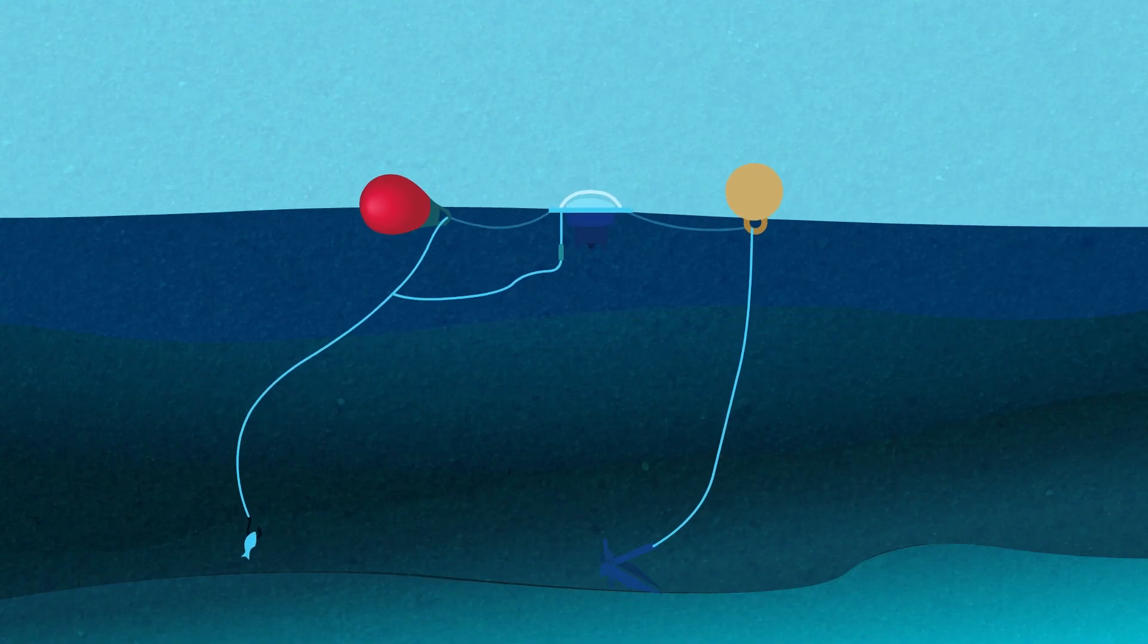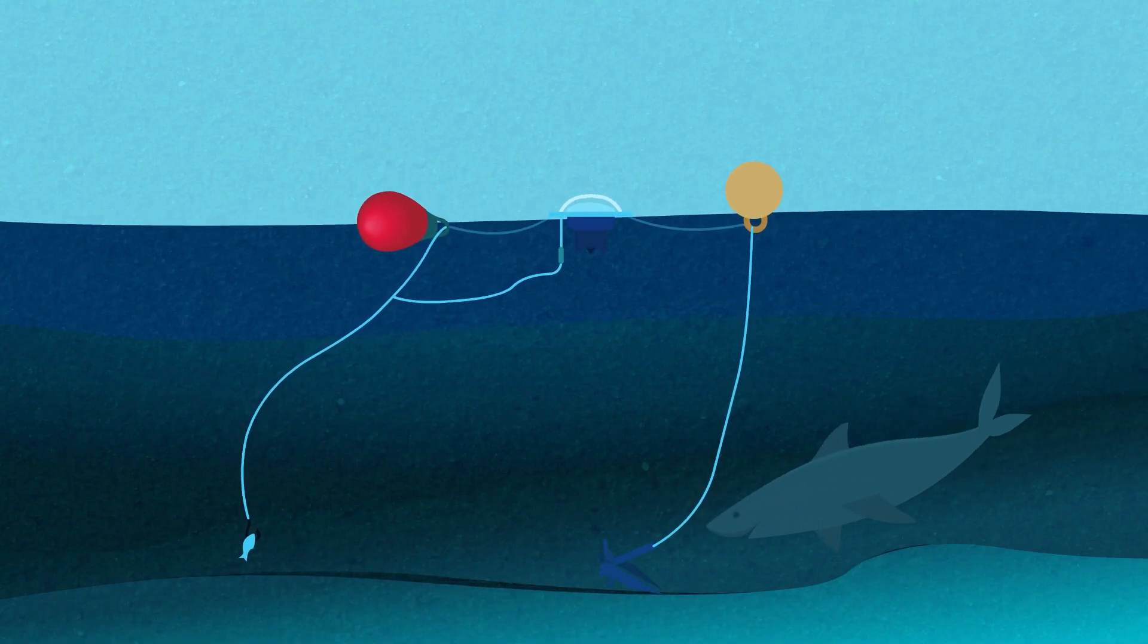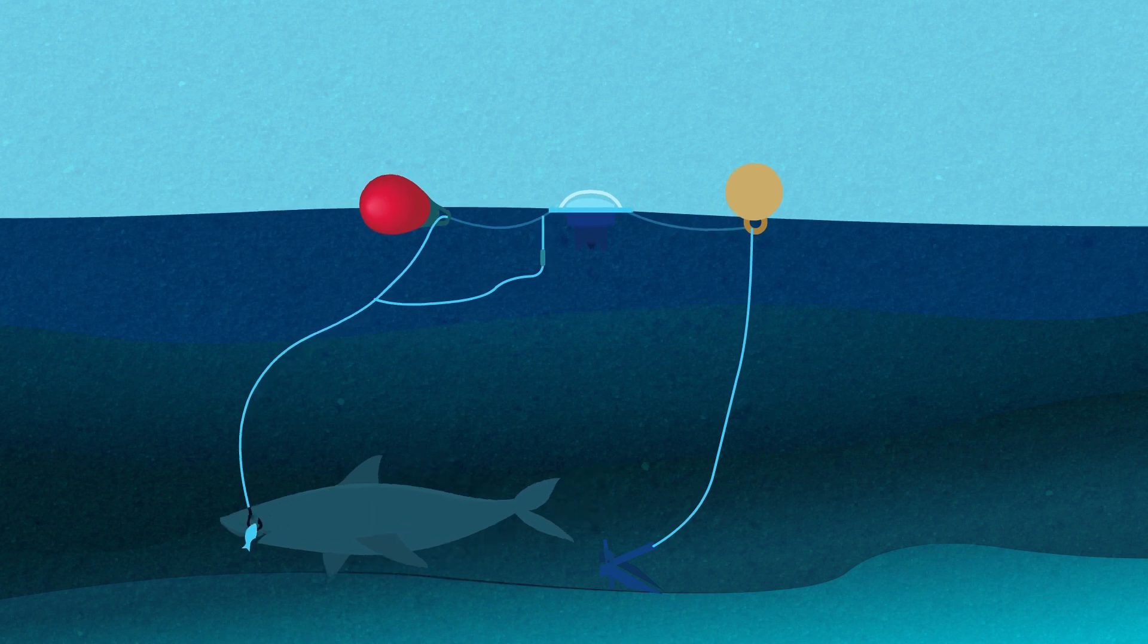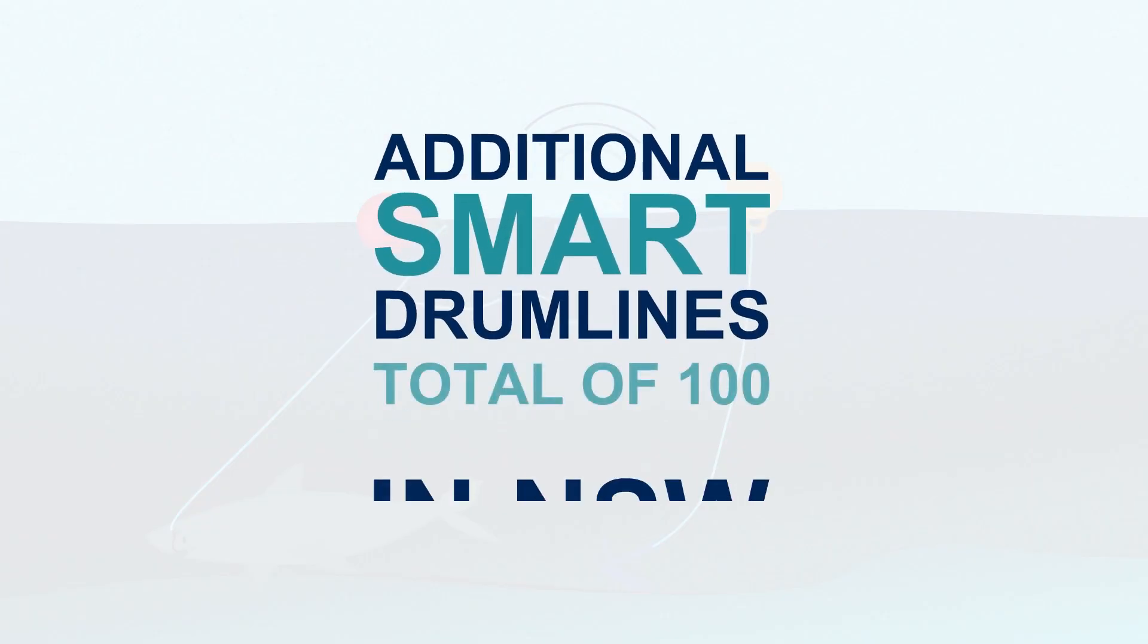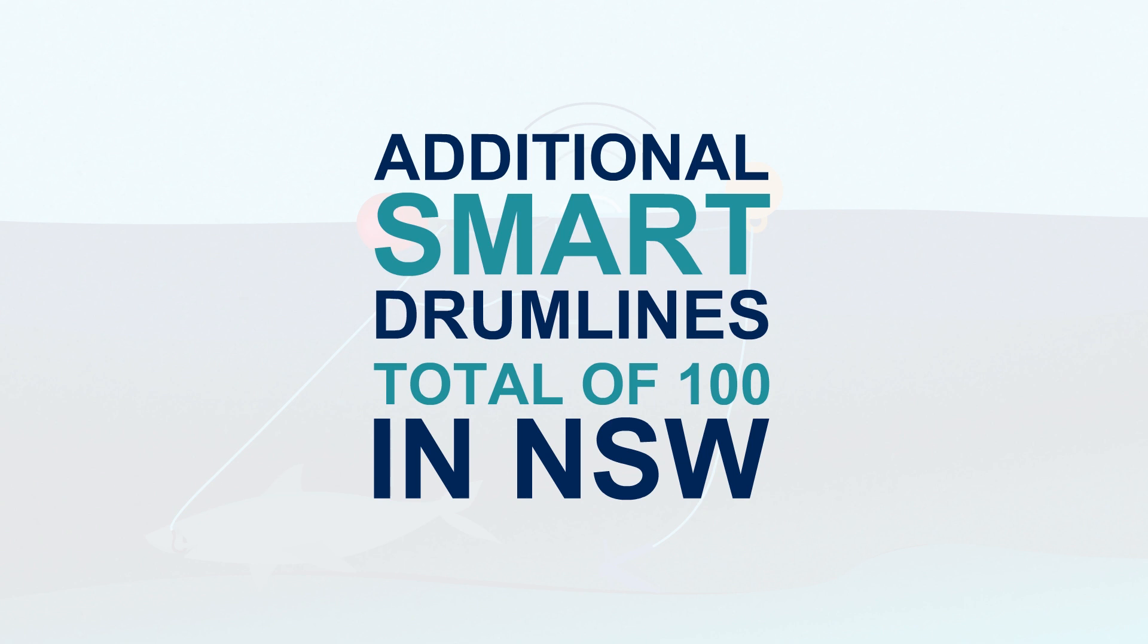Due to the overwhelming success of smart drumlines to date, this year the NSW Government is rolling out additional smart drumlines to take the total used in NSW to 100. This will be undertaken in consultation with local communities.